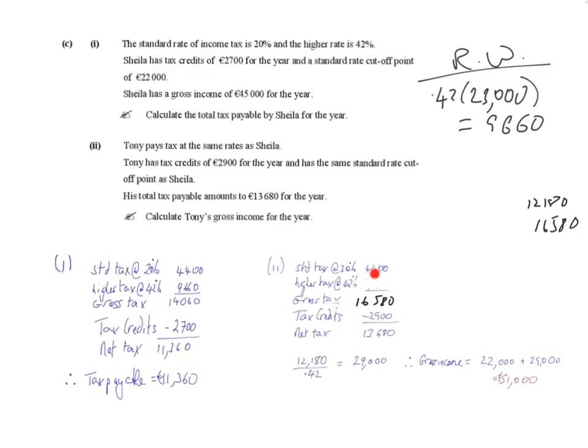And now we know if we add €4,400 to the higher tax we get €16,580, so to get the higher tax we simply take €4,400 from this number. So if you work that out in your calculator you get €12,180. So now we know the higher tax is €12,180. Now if you remember for Sheila, to calculate the higher tax what we did was we got the difference between the gross income and the standard cutoff point and then got 42% of that.